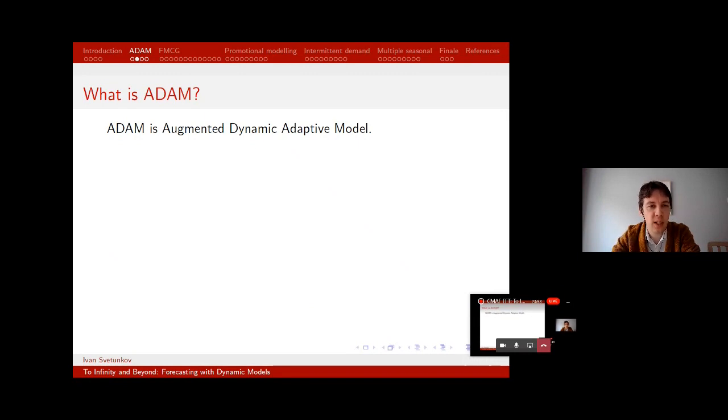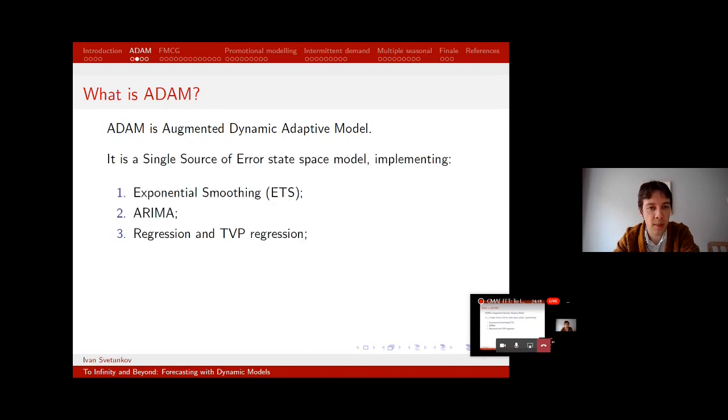Dynamic, no, actually should start with augmented. Augmented means that it's not just ETS, it's not just ARIMA, it's something bigger. Dynamic implies that we have these dynamic structures of ARIMA or of ETS. So all time varying parameters model. And adaptive refers to this property of some of the parameters or components of the model to change over time, to adapt to changes. It is actually a single source of error state space model. If this tells you anything, if it doesn't, then this has the direct link to exponential smoothing in ETS form.